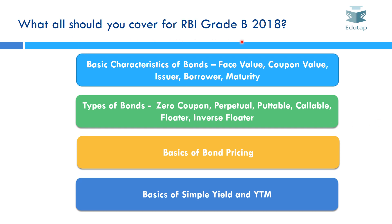Now what all should you cover for RBI Grade B 2018? The history shows that you need to read just the basics from this topic, because the questions that have been asked have been on very basic concepts. However, since bonds is such an important topic, we would suggest you read all the important aspects. Basically you should cover: what is the face value, coupon value, issuer/borrower, and maturity of a bond — these are the basic characteristics of any bond.